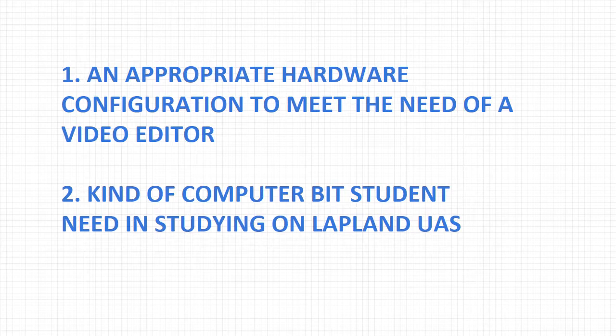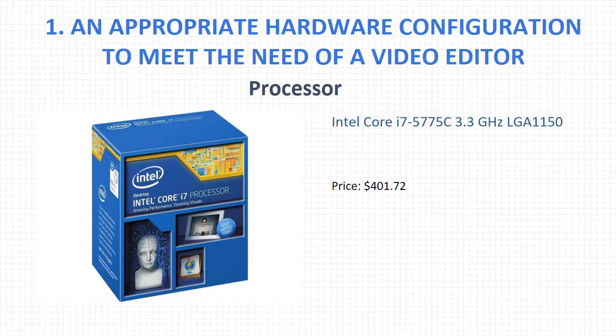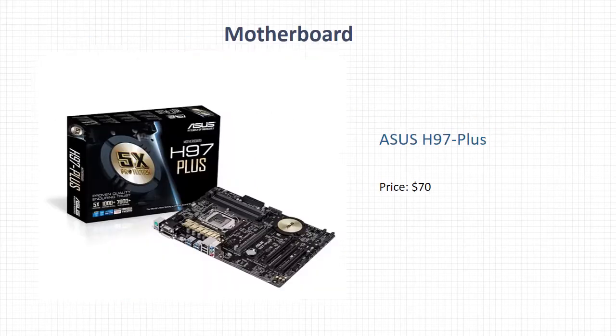The first component I want to introduce is the Intel Core i7-5775C 3.3 GHz. It's not only a really strong processor, but it also includes integrated Iris Pro graphics. It is the first processor with Intel's most advanced onboard graphics engine, and its price is $402.